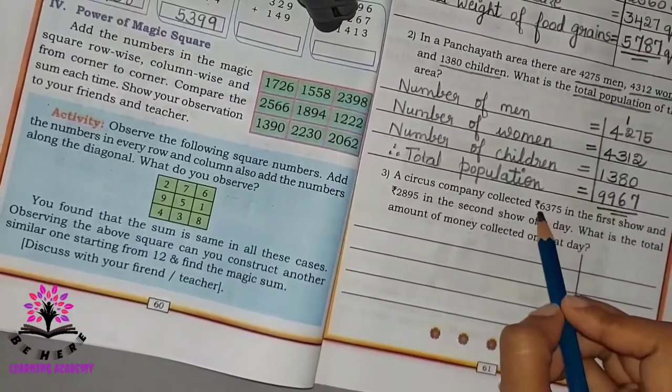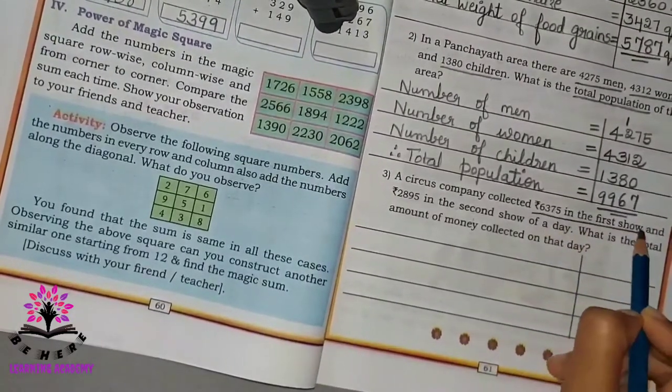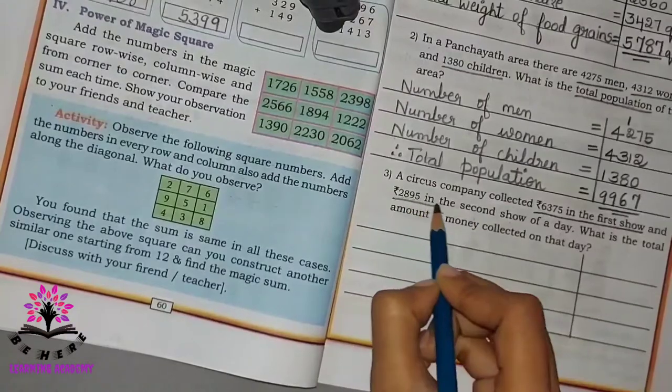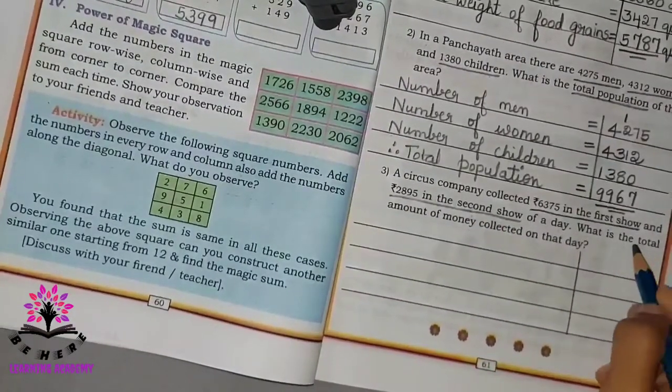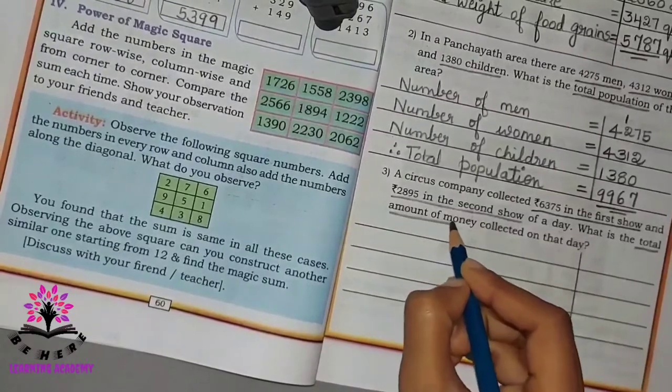So they have given the amount collected in the first show and the amount collected in the second show, and you have to find out the total amount of money collected.